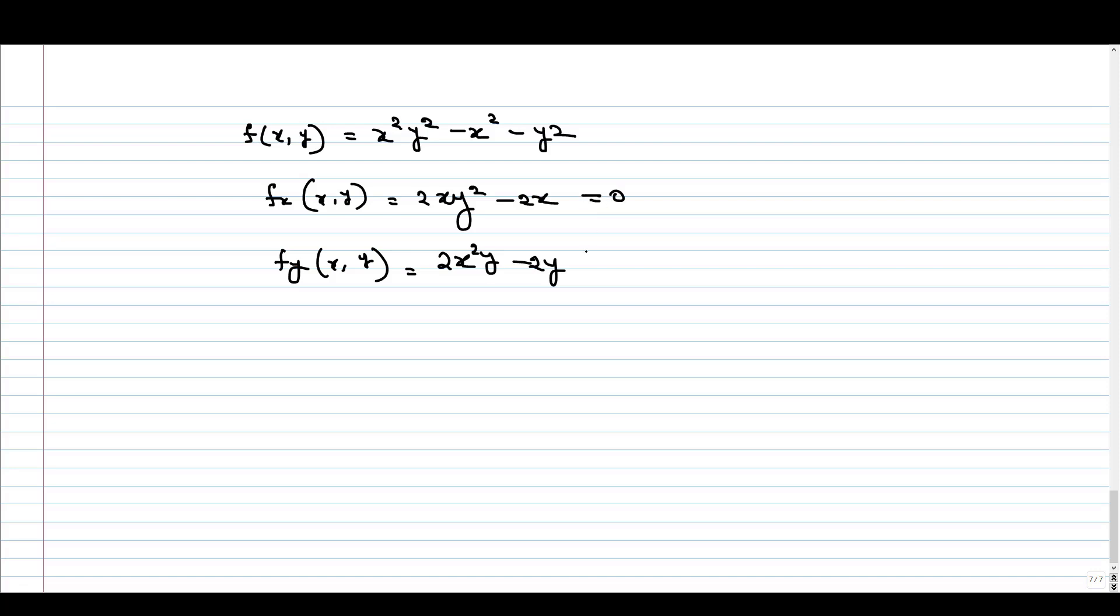Now, if I equate both of them to 0, I will get two equations. The first equation will give me 2x into y square minus 1 equal to 0, and the second equation will give 2y into x square minus 1 equal to 0.